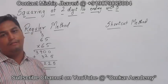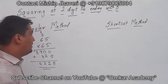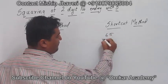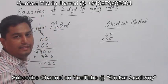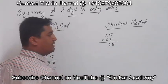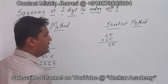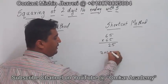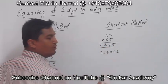This is my regular method. Now I will be showing you the shortcut method. 65 into 65 — first of all, write 25 straight away. What is the next number to 6? It is 7. 7 sixes are 42. So my answer is 4225.